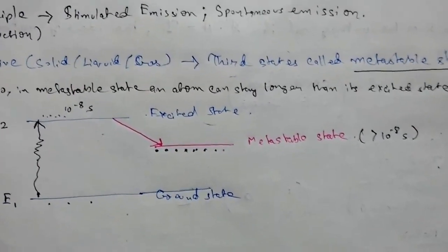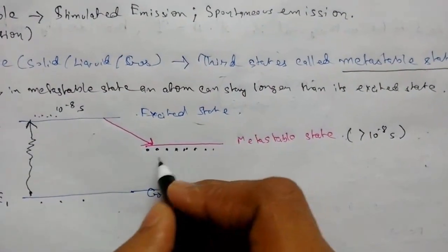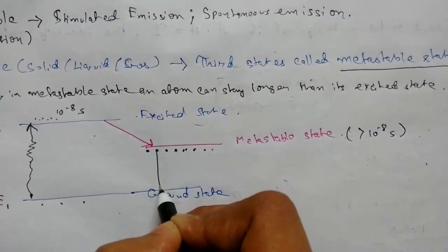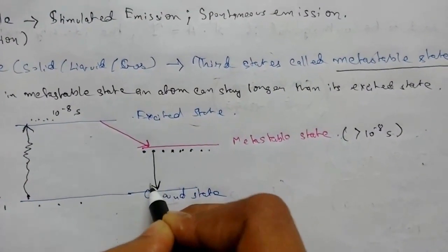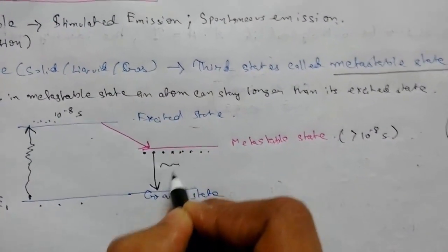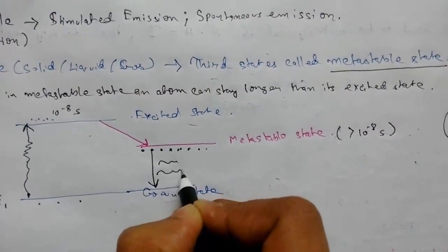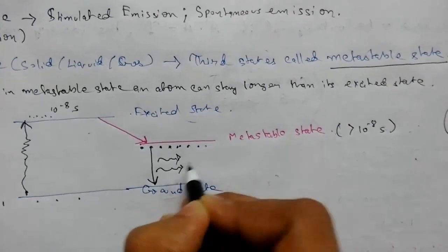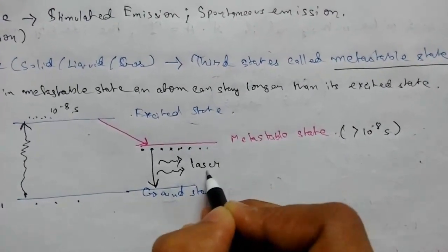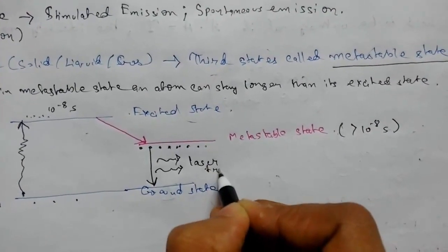Let me complete the diagram. What will happen next is that by stimulated emission, all the atoms will come down and will emit photons, and this is our laser transition.